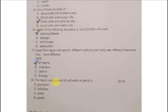Next question. The major component of cell walls in plant is A. Glycogen, B. Cellulose, C. Water and D. Starch. The correct option is B. Cellulose.